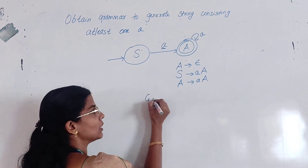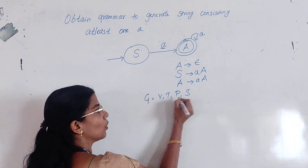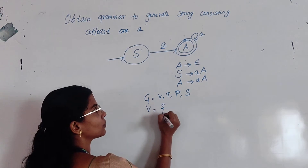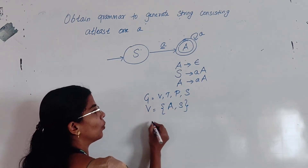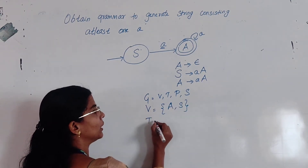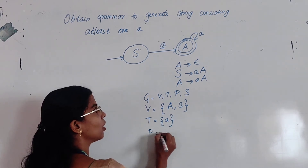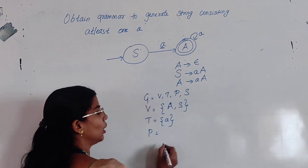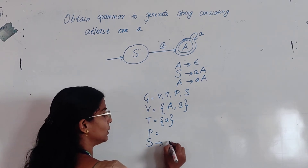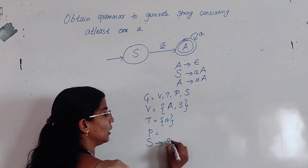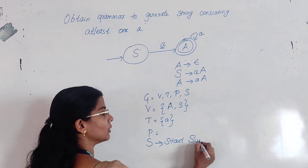So these three productions form the regular grammar. Write the grammar: G is equal to (V, T, P, S). The variables are A and S. The terminals are small a. The productions are all three productions, and S is the start symbol. You have to conclude like this.